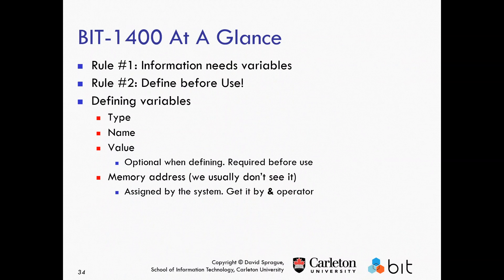A couple of rules: information needs variables. If you're going to have some number, it has to be stored somewhere — the computer doesn't have a brain, it needs to store things. We have variables where we can store our values. When a function does something and passes out a value, you have to catch that value and store it somewhere. If you make a variable, you have to define it before you use it. When we define a variable, we say what type it is — is it a char, is it an int — and we give it a name.